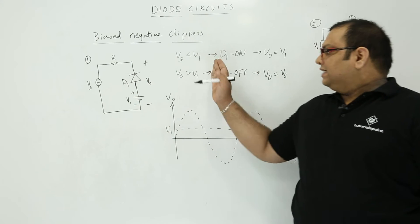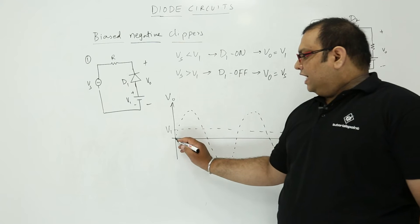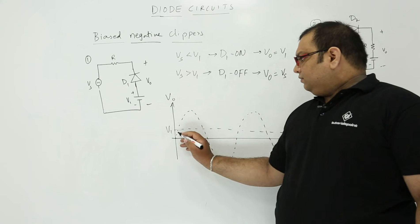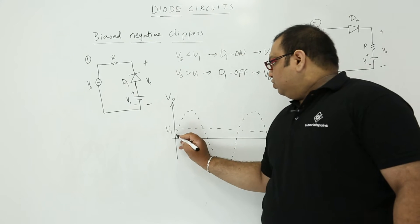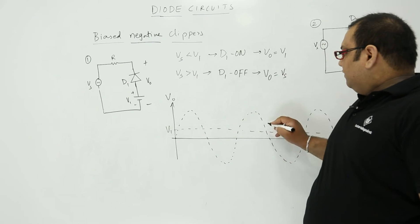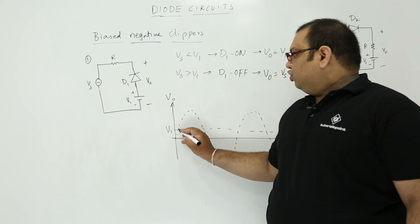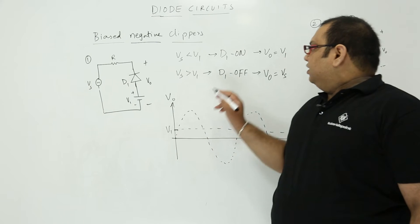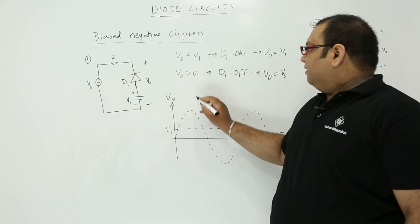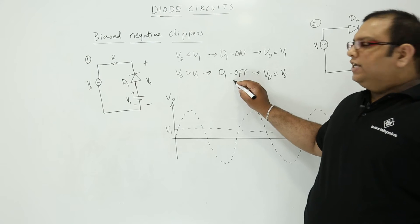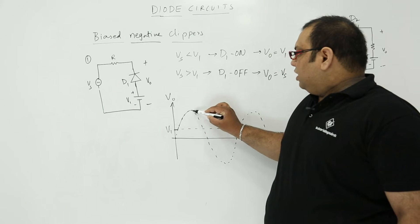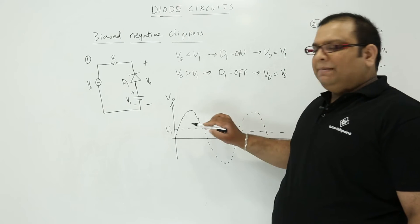Now let us represent these conditions on the waveform. The input waveform is starting from zero. When it is starting from zero, it is less than V1 only. So when it is less than V1, output voltage is equal to V1. The input waveform is reaching V1, crossing V1, going less than V1, more than V1, less than V1 like this. During the period from 0 to V1, input voltage is less than V1, so output is equal to V1. When input voltage goes beyond V1, diode is off and output is same as the supply voltage. As long as it is more than V1, we get this voltage same as Vs.